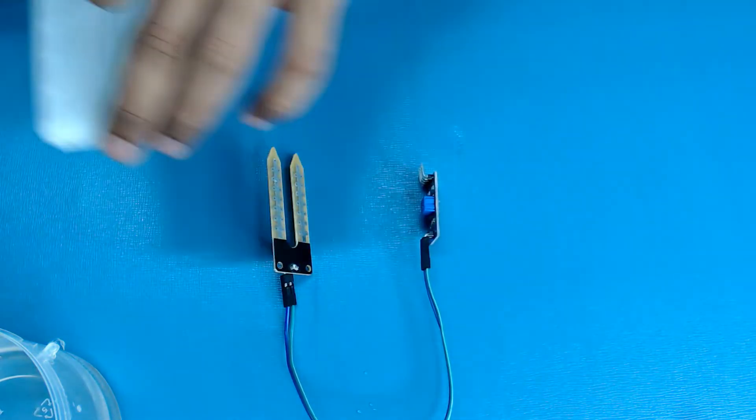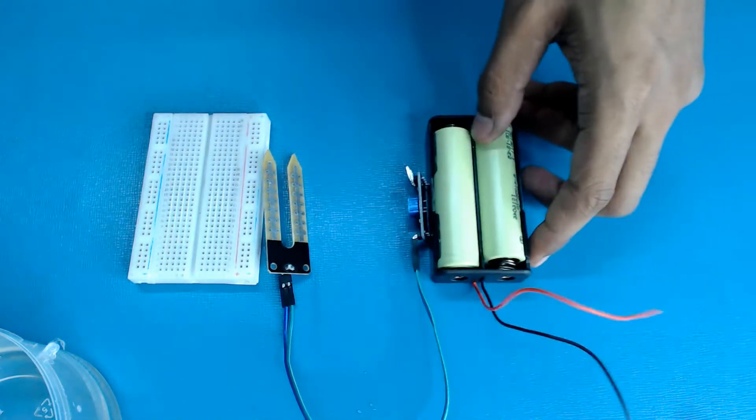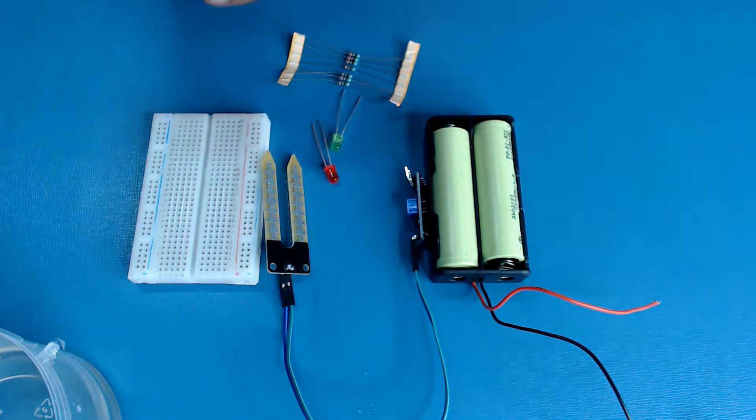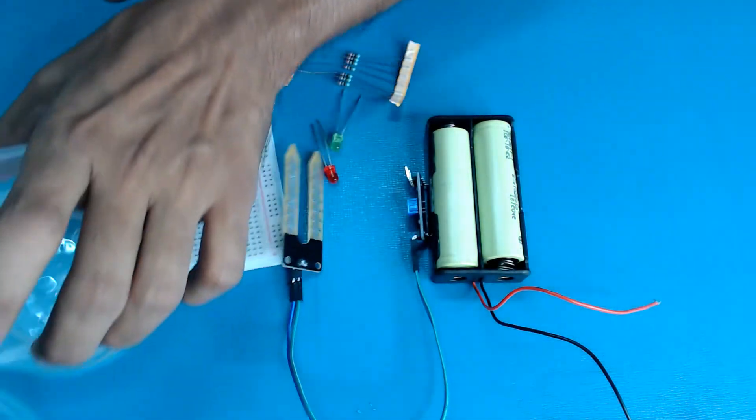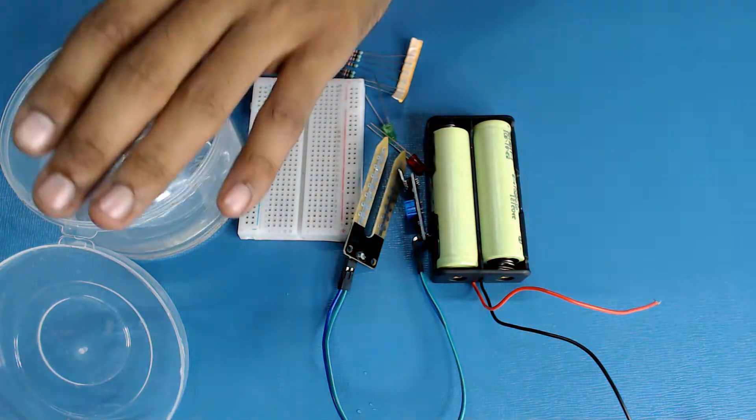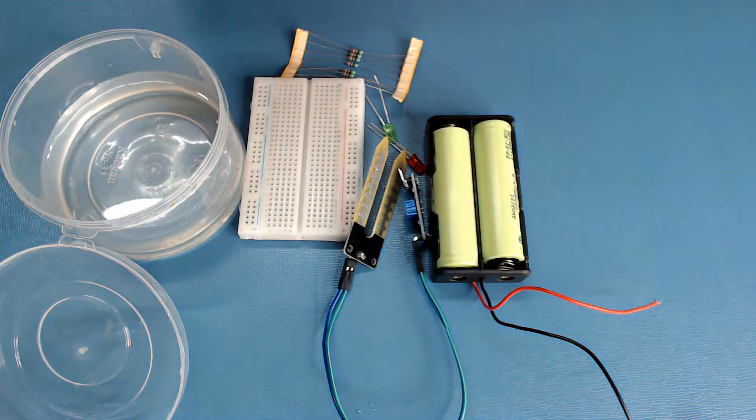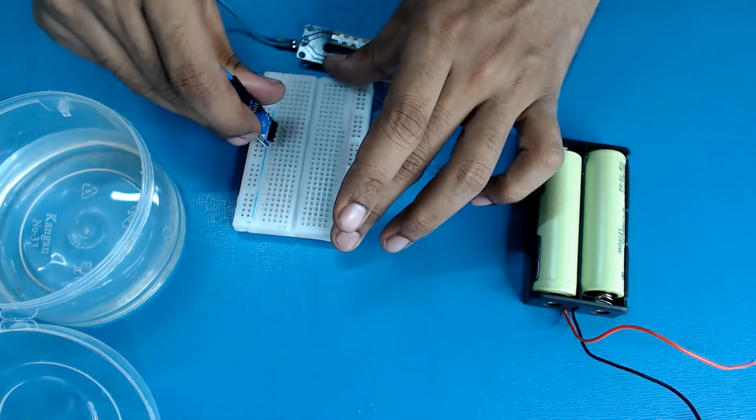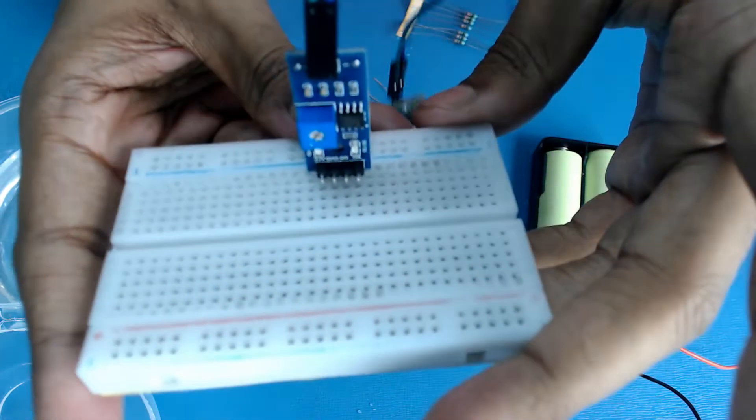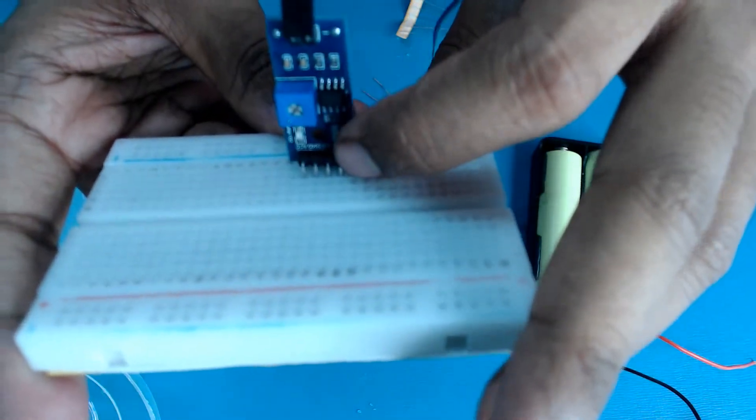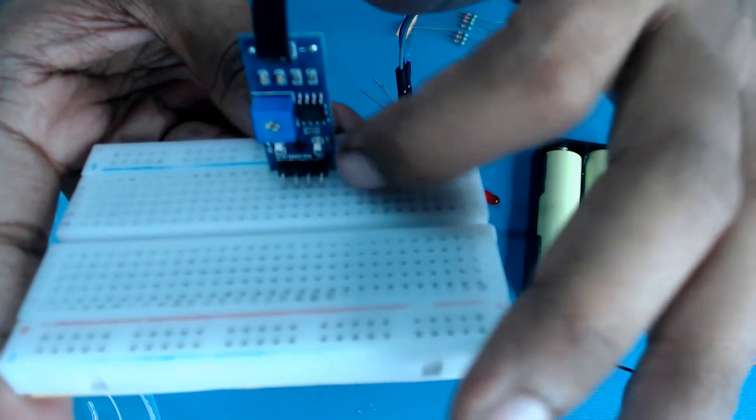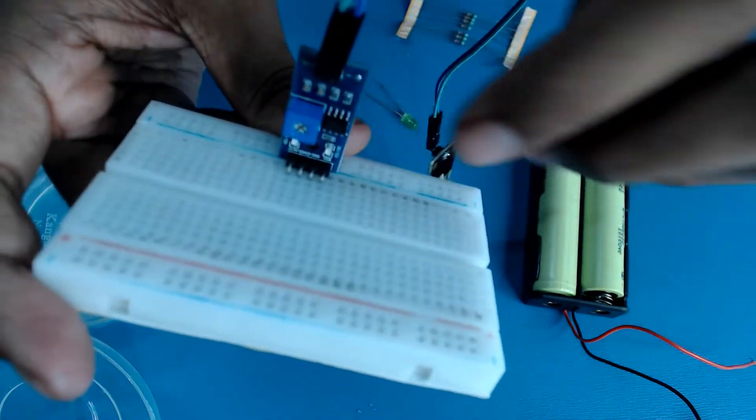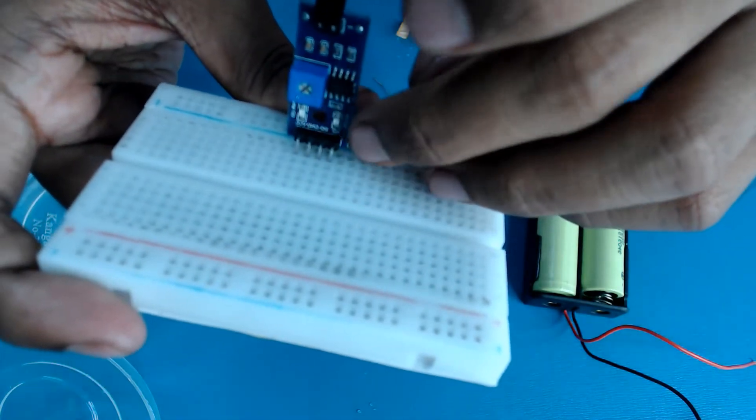Now let's use our breadboard, power supply, resistance, and LED. These are the components we require to measure whether the soil has moisture in it or not. First, let's place our I2C in the breadboard like this. All four pins are in different vertical sections, so they're not connected with each other.